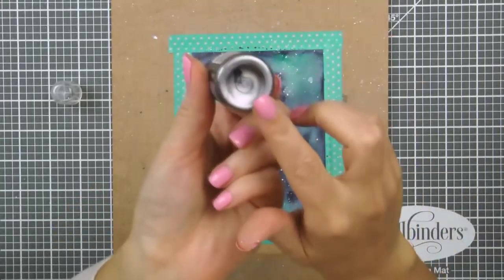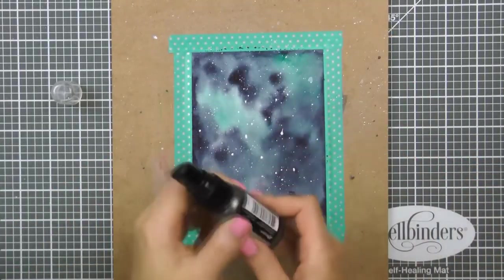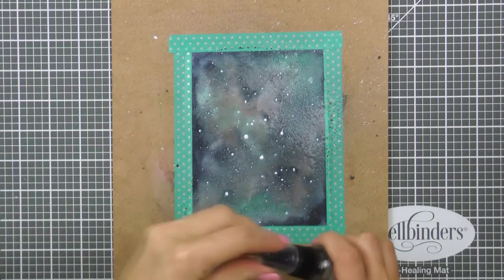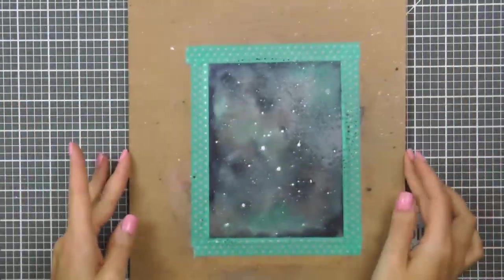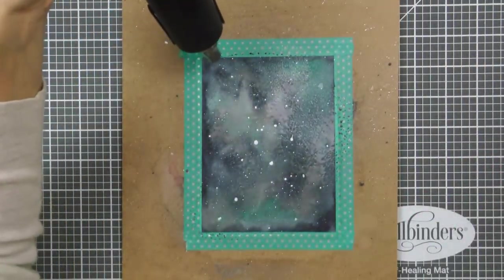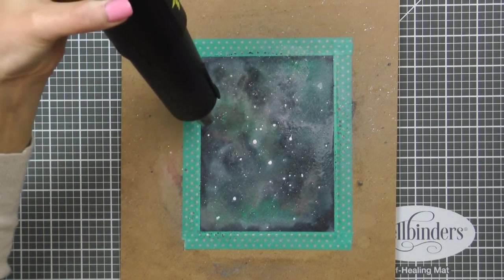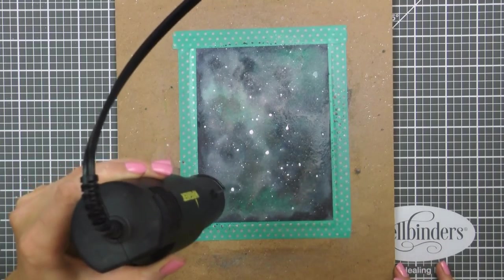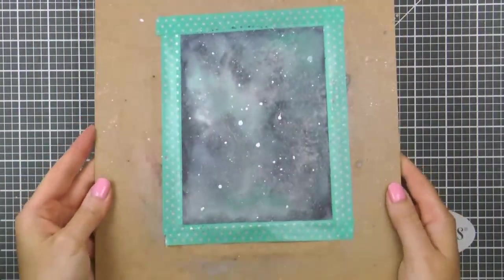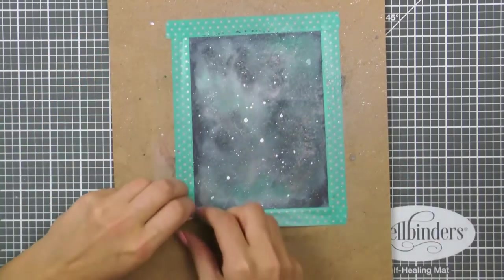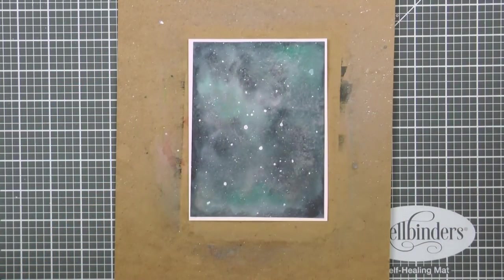Finally, I want to add some shimmer, well lots of shimmer, so I'm going to use Distress Mica Spray in Brushed Pewter. You need to shake the bottle to get the shimmer mixed with the liquid and I'm going to spray my background generously. Again, I'm using my heat tool to dry this piece and finish working on my galaxy background. Here's what it looks like. Lots of shimmer and the best part is that this shimmer doesn't come off. It's permanently set there.